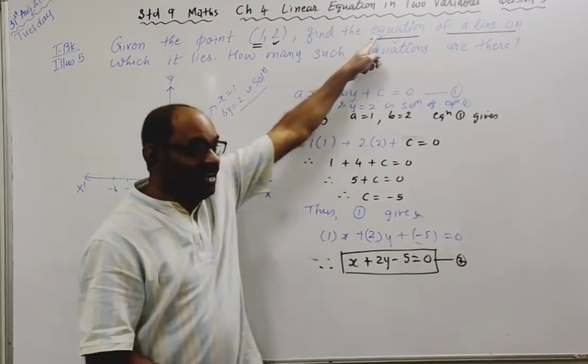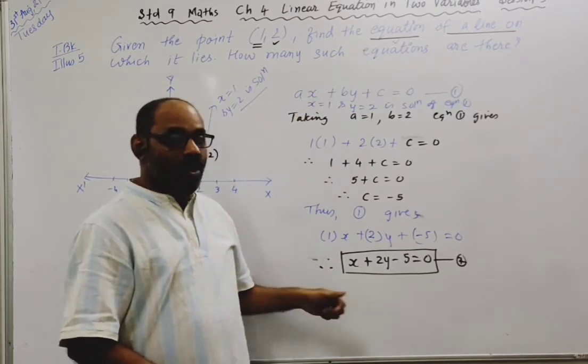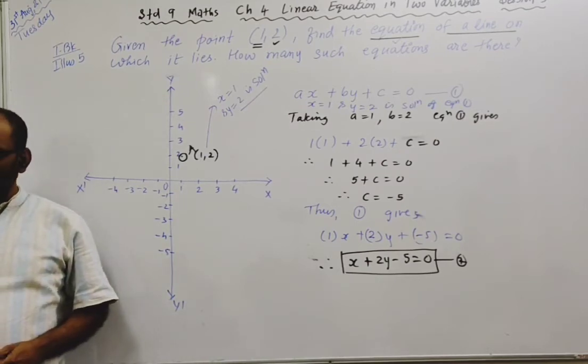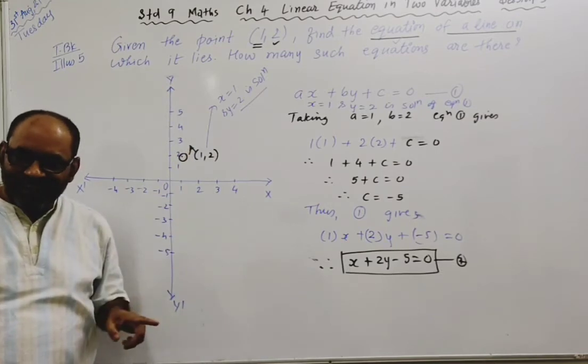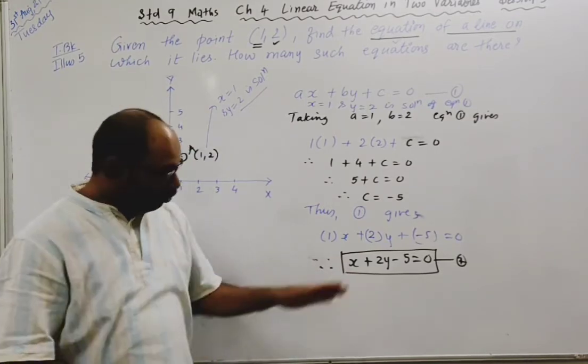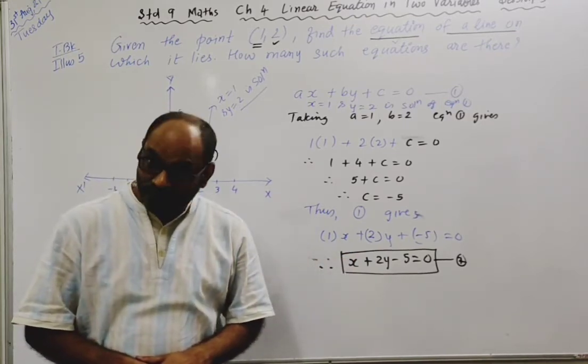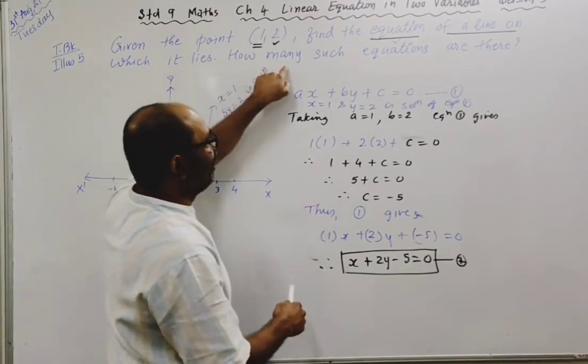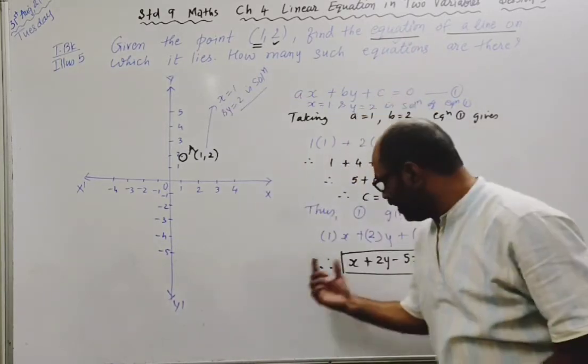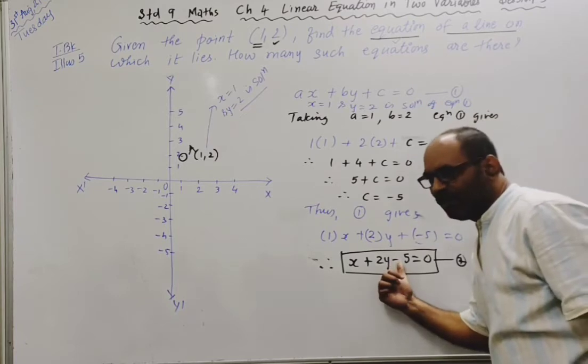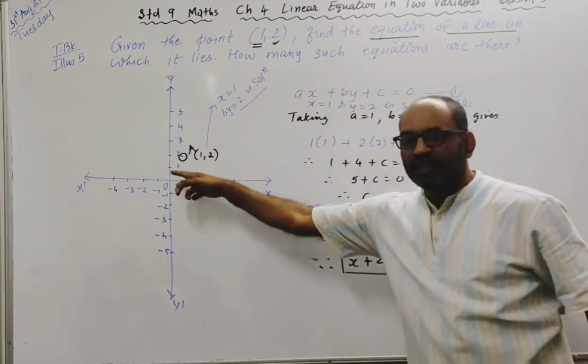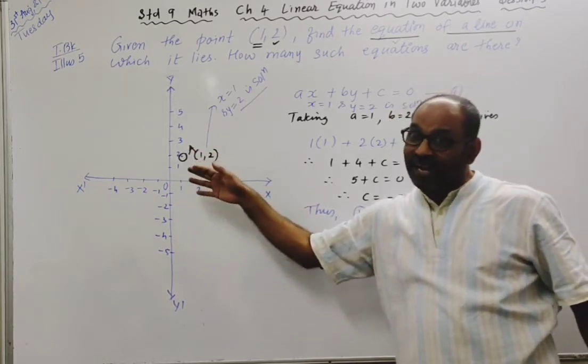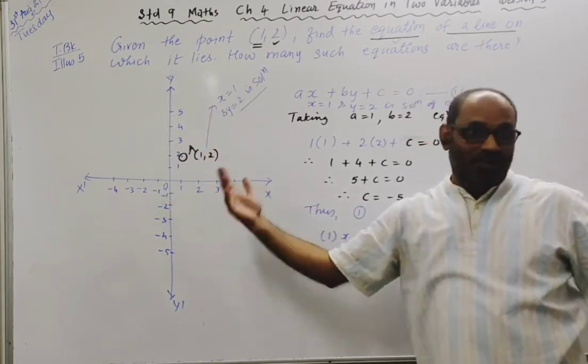How many such equations are there? There are infinite equations because we saw one particular line which passes through point A, and we know there are infinite lines on which point A lies. So equations will be infinite.